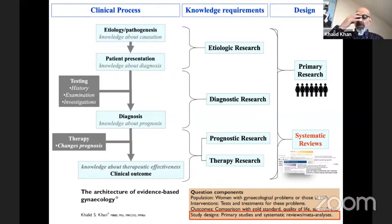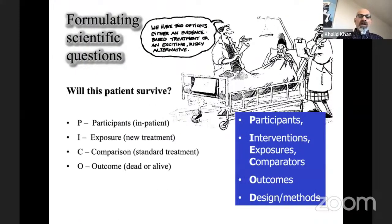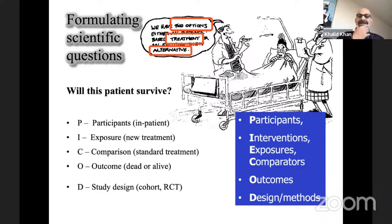Concerning systematic review, framing the question will be virtually identical to the way you frame a question for a trial, except here the study design will be a systematic review that puts together data from primary studies. You primarily combine various studies that compare a treatment with an alternative intervention to assess the outcome of patients exposed to that treatment versus the alternative.